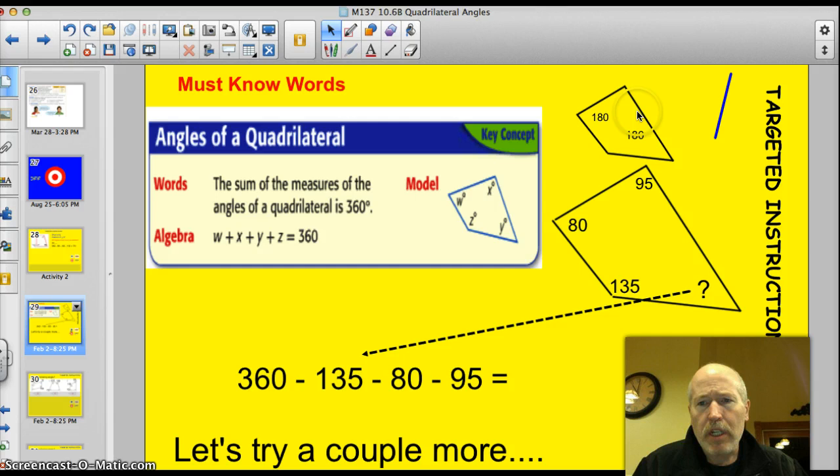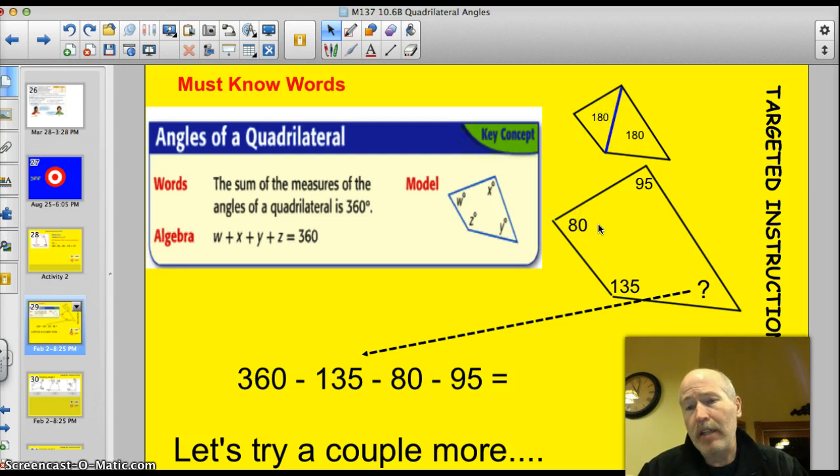If you're not sure why that works, take a look at this little shape right here. I just enlarged that shape that they gave us. If I take and put this line in here, if I go from one vertex to another, I can divide them into two different triangles, can't I? And there are 180 degrees in each triangle, correct? Therefore, 180 plus 180 is 360.